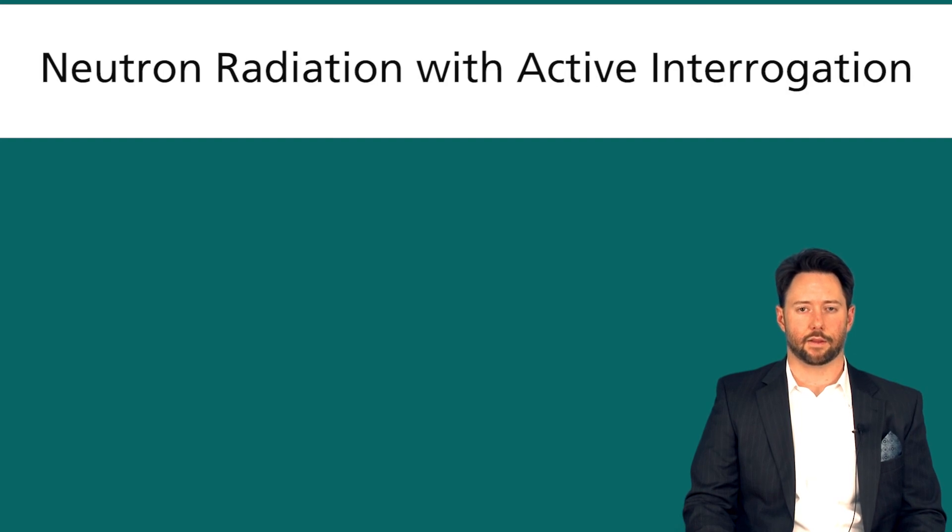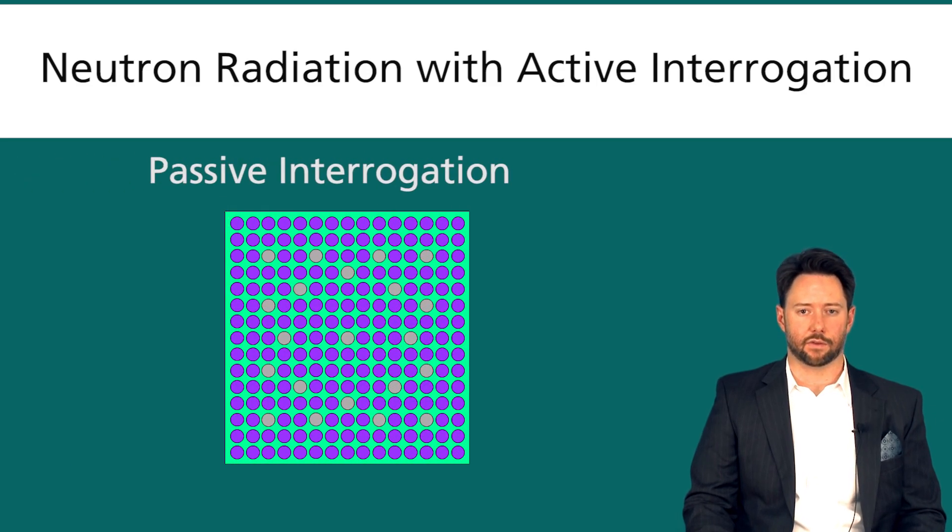One other thing I would like to mention here is neutron radiation with active interrogation. Passive interrogation just means observing spent fuel with a radiation detector. So you just put a radiation detector beside the fuel assembly and see what you read. For neutron radiation, that passive interrogation will give you a signal mainly from curium isotopes and the spontaneous fission within those curium isotopes.